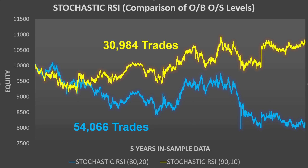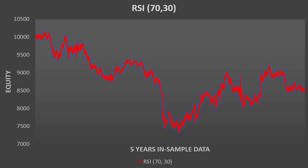This whole exercise is about comparing RSI with Stochastic RSI. So let's take a look at the exact same process using the RSI indicator. As discussed previously, we need to use less aggressive thresholds because RSI rarely reaches very extreme levels, so the starting point for RSI will be levels of 70 and 30. Using those, there are periods of time where we see equity increasing, which gives us some level of hope that we can turn this into a profitable strategy.